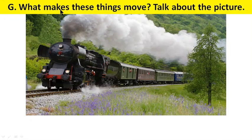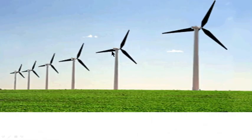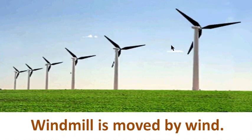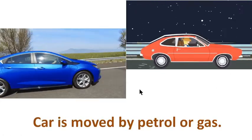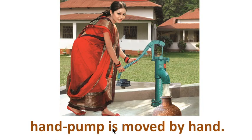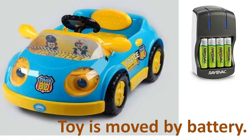Question number G. What makes these things move? Talk about the picture. This thing is a train — a railway engine is moved by steam. Windmill is moved by wind. Car is moved by petrol or gas. Hand pump, or tube well, is moved by hand. A toy is moved by battery.